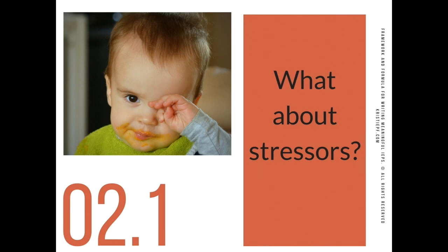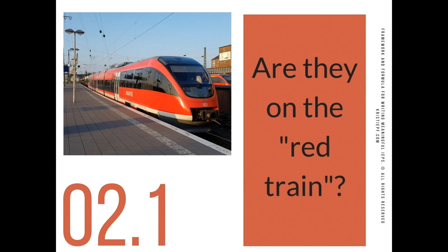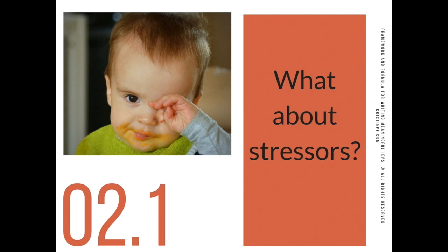The second thing to really think about is stressors. This one and the next — are they on the red train — will kind of go hand in hand. For those familiar with Stuart Schenker's work around children being flooded with emotion or being on the red train, you'll see stressors and the red train going hand in hand. Many times children are tired, hungry, confused, overwhelmed. Their sensory systems are so dysregulated that everything seems loud, unclear, and scary. So are children responding in a way that looks different, but really it's their bodies responding to a series of stressors?